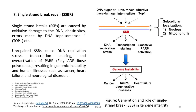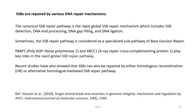Let us now go to the seventh repair mechanism: single strand break repair. Single strand breaks are caused by oxidative damage to DNA, abasic sites, and errors made by DNA topoisomerase 1. Unrepaired SSBs cause DNA replication stress, transcription pausing, and over-activation of PARP, resulting in genomic instability and human illnesses such as cancer, heart failure, and neurological disorders. There is a canonical SSB repair pathway — a rapid global SSB repair mechanism — including SSB detection, DNA end processing, DNA gap filling, and DNA ligation.